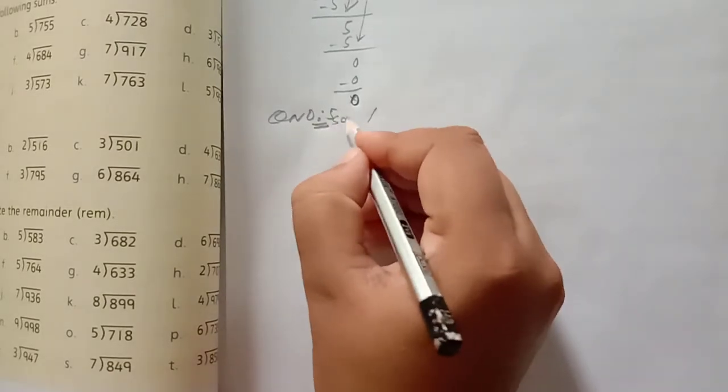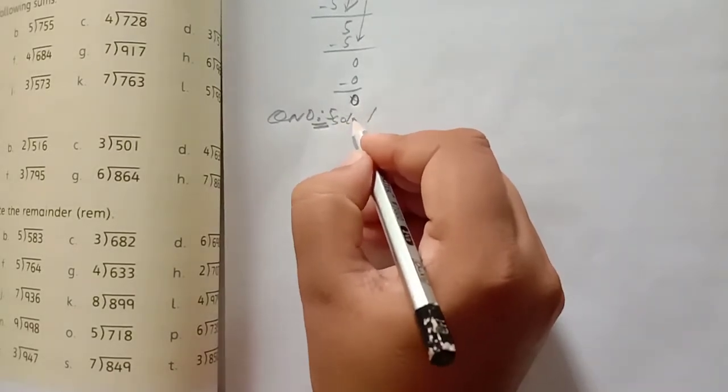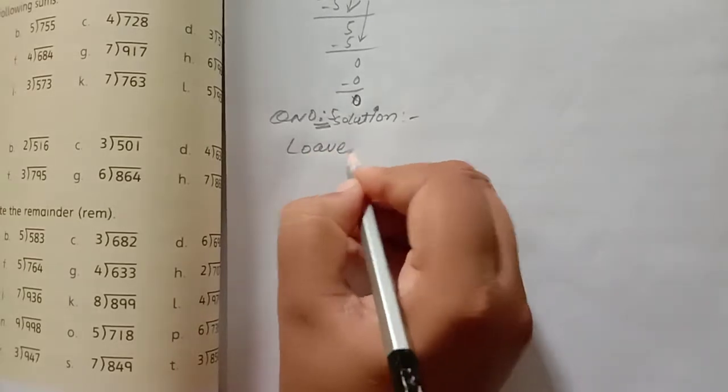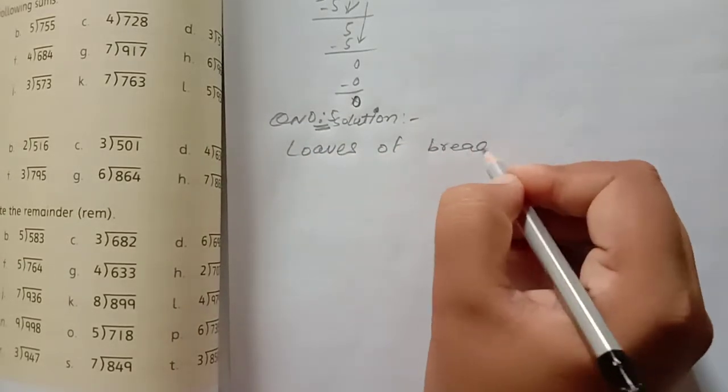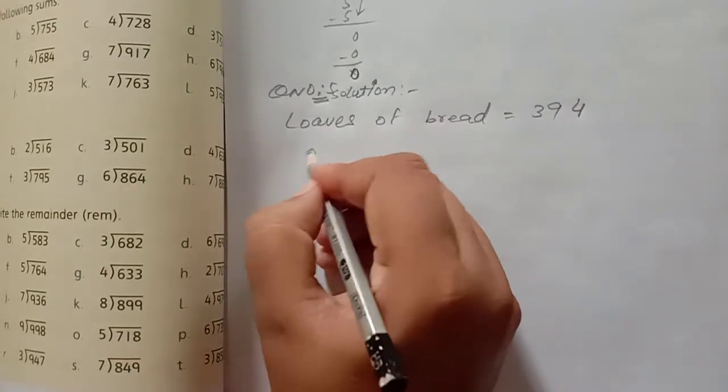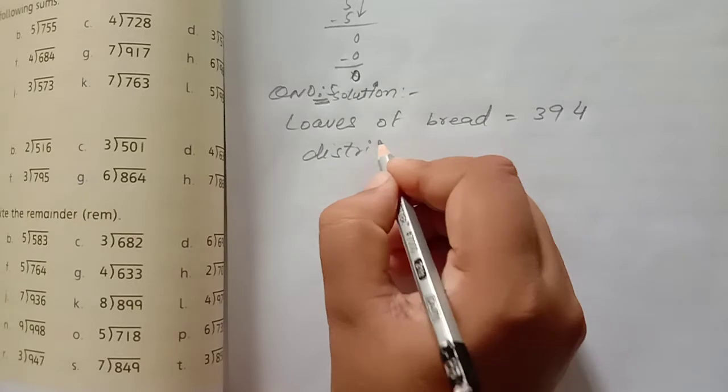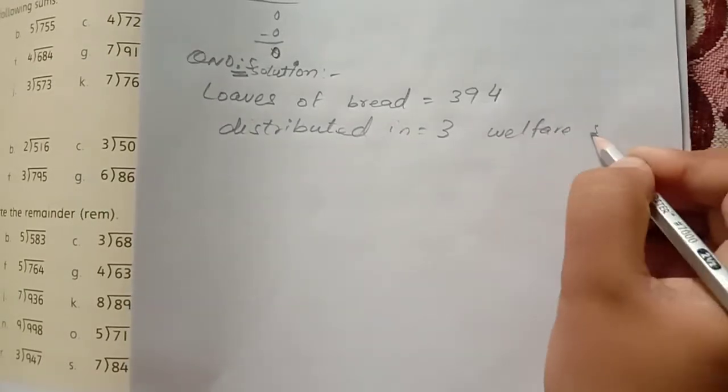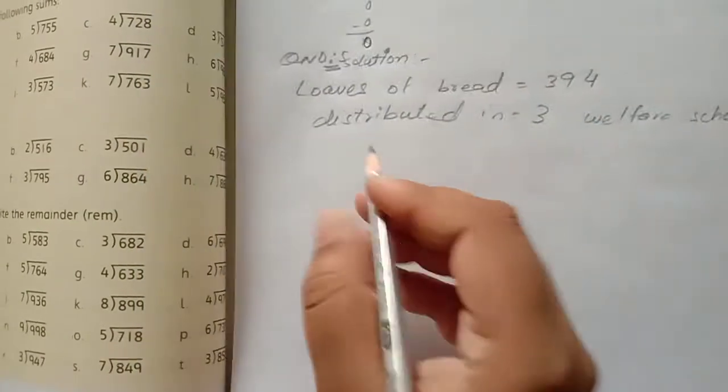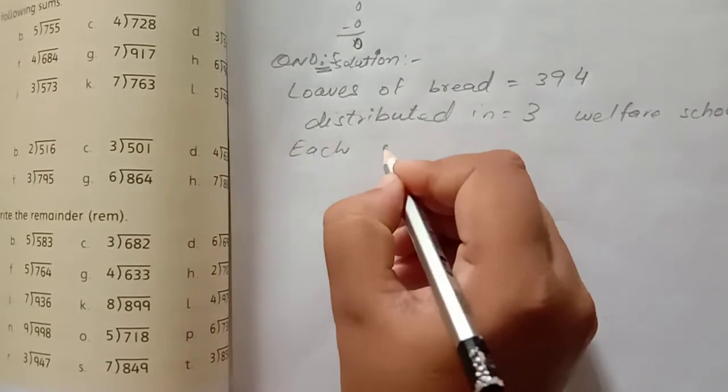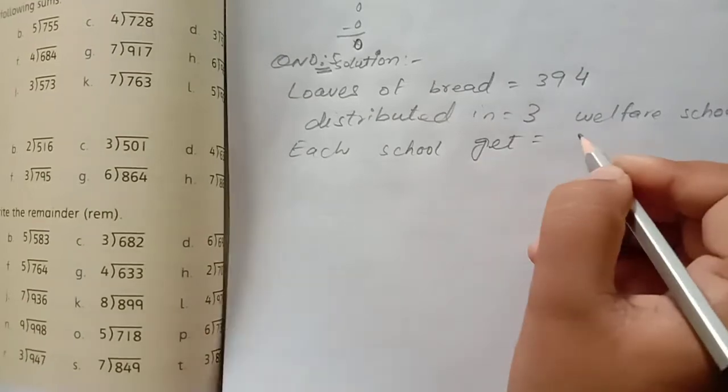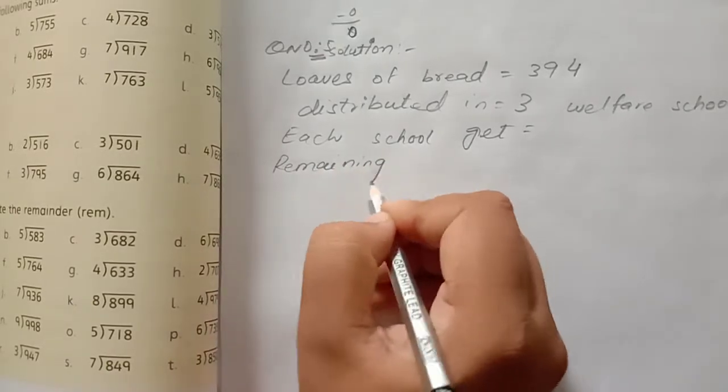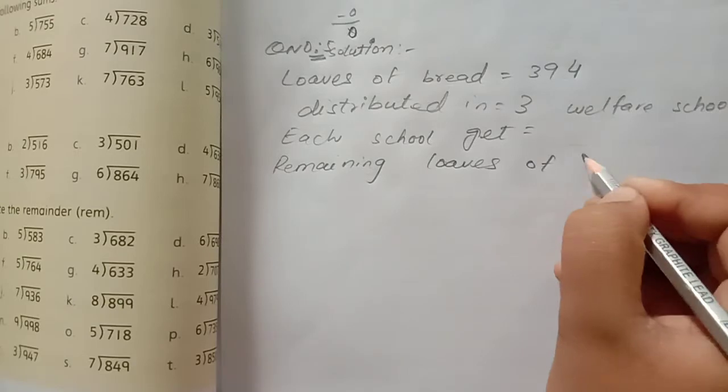First statement, we write the solution. 394 loaves distributed in how many? Three welfare schools. Each school get, each school get, this we write. Remaining. Remaining loaves of bread we write.